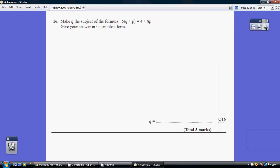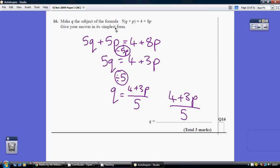Question 16. Start off by multiplying out the brackets just to get rid of the brackets. So 5 times q is 5q, 5 times p is 5p, giving us this.